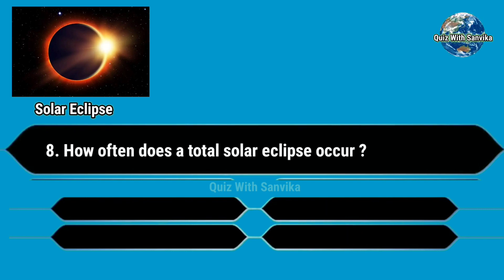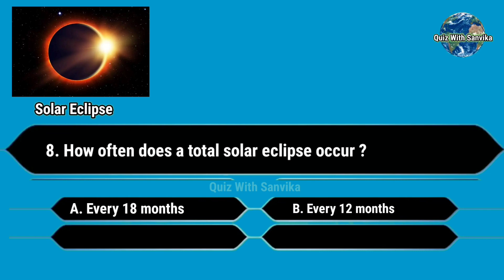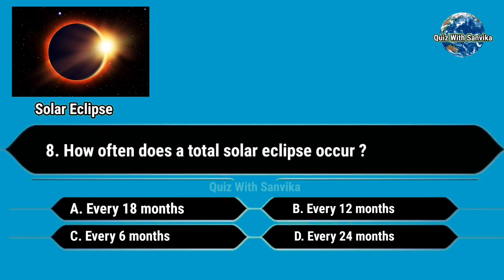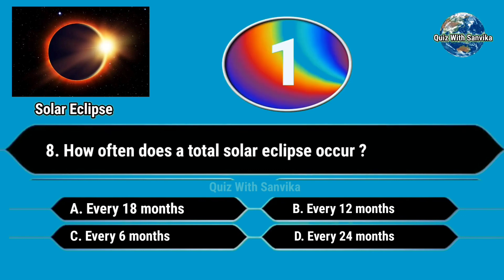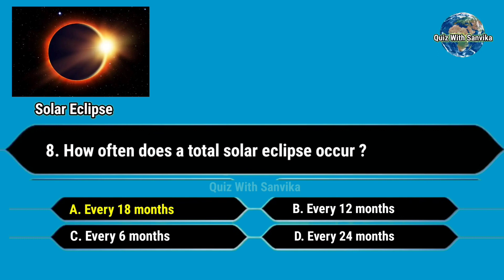How often does a total solar eclipse occur? Options are A. Every 18 months, B. Every 12 months, C. Every 6 months, and D. Every 24 months. Answer is A. Every 18 months.